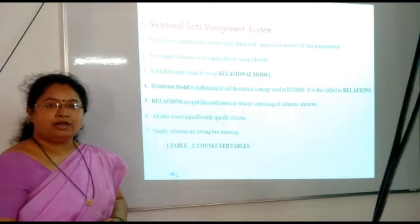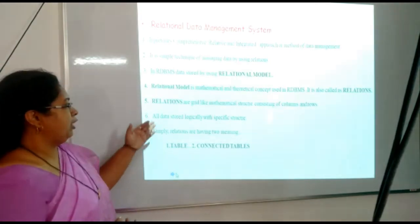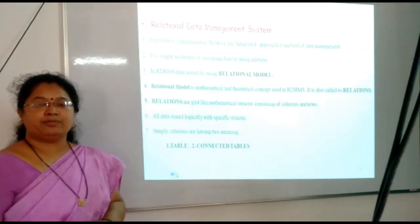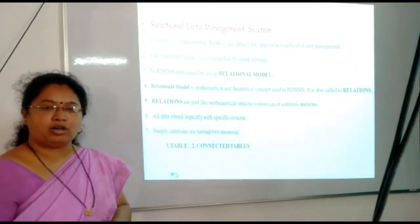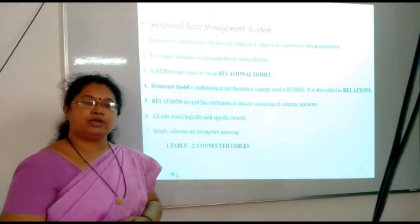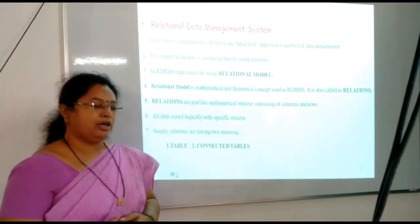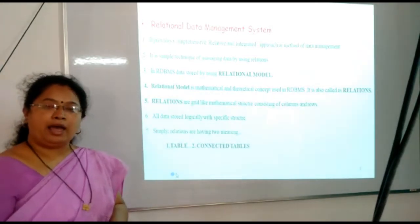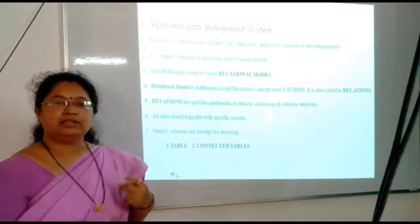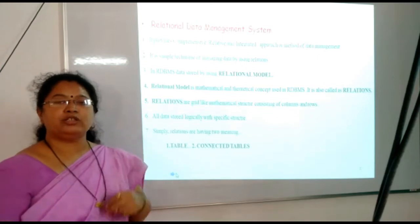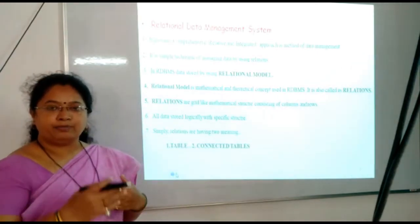What is the meaning of relational model? Relational model is used in computer science through RDBMS. Relations are grid-like mathematical concepts or structures having the intersection of rows and columns. All data are logically stored within that relational model or relations. Simply, relations have two meanings: first, a relation is nothing but a table, and those tables are connected with each other, meaning data of one table is connected with data of another table.